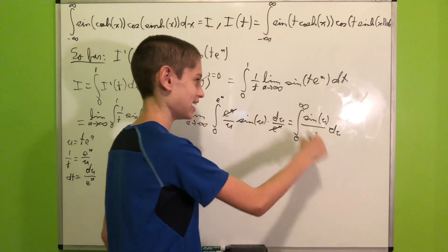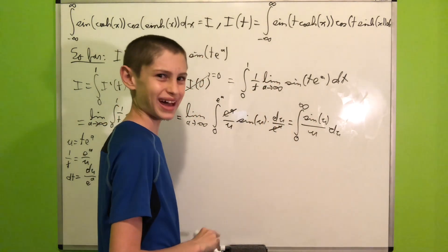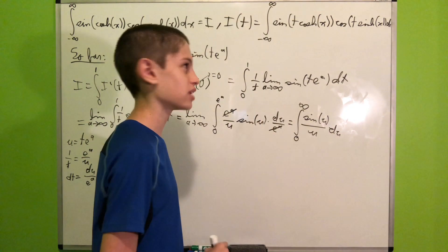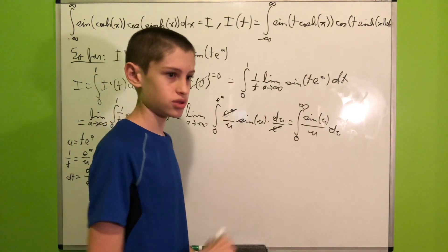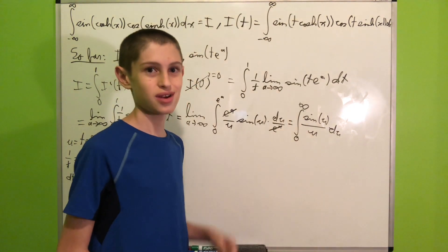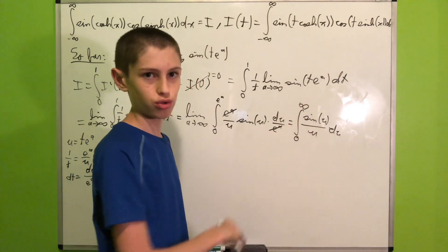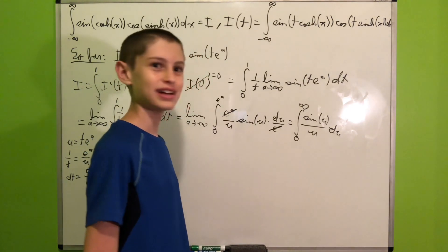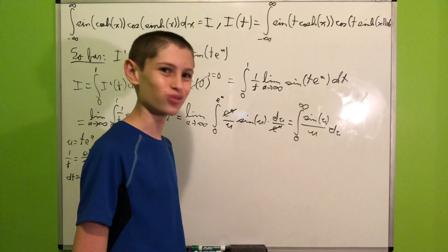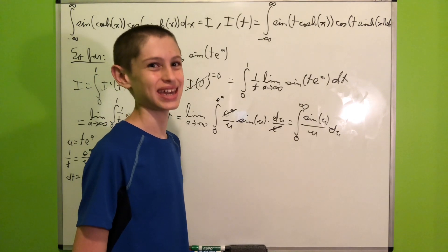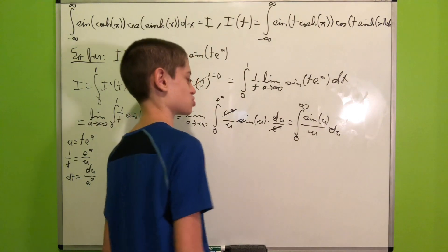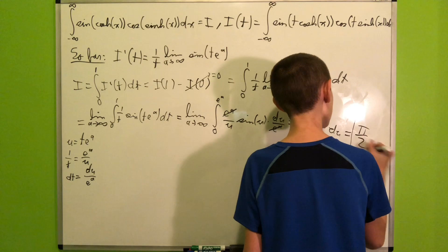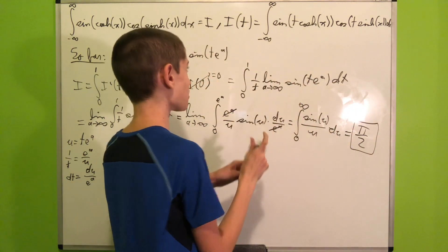We arrive at the integral from 0 to infinity of sine(u)/u du — the famous Dirichlet integral. It can be evaluated using differentiation under the integral sign, which is essentially the method we just applied. The answer is π/2.